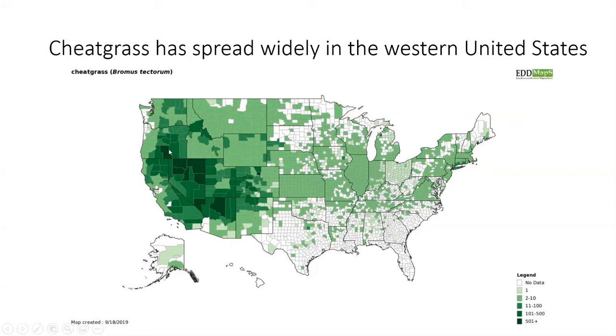Southern Oregon, Idaho has a large amount of cheatgrass as well, and so do parts of Utah and parts of western Colorado.